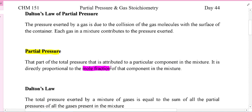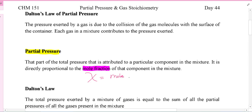So what is mole fraction? Mole fraction, chi - it's the Greek letter chi - is equal to moles of gas i, whatever individual gas it is, all over the total moles. It is a unitless number.